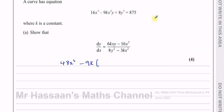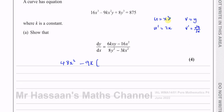To differentiate this product, let u = x² and v = y. Differentiating u with respect to x gives 2x. Differentiating y with respect to x gives dy/dx. Using the product rule, the result is 2xy plus x²(dy/dx). So the full term becomes minus 9k times (2xy plus x² dy/dx).